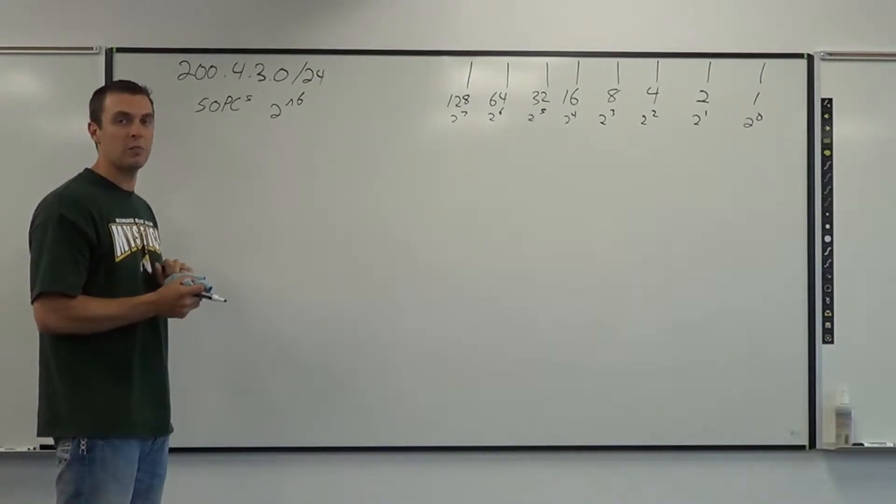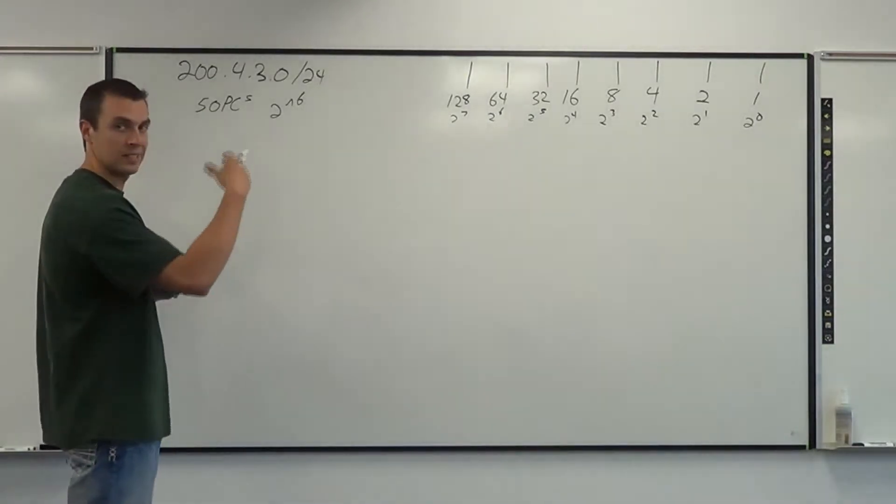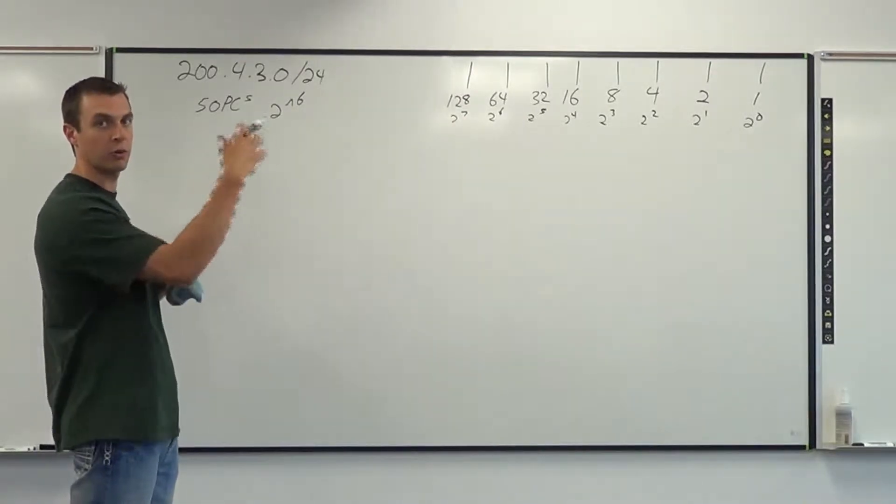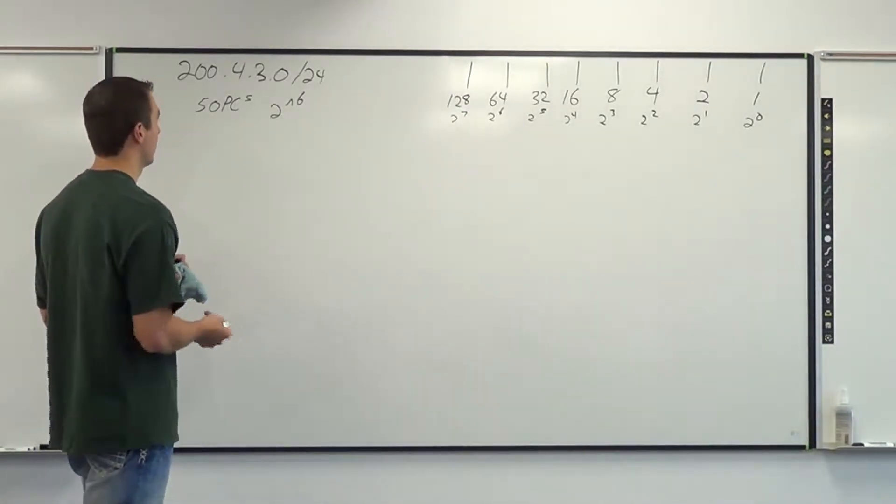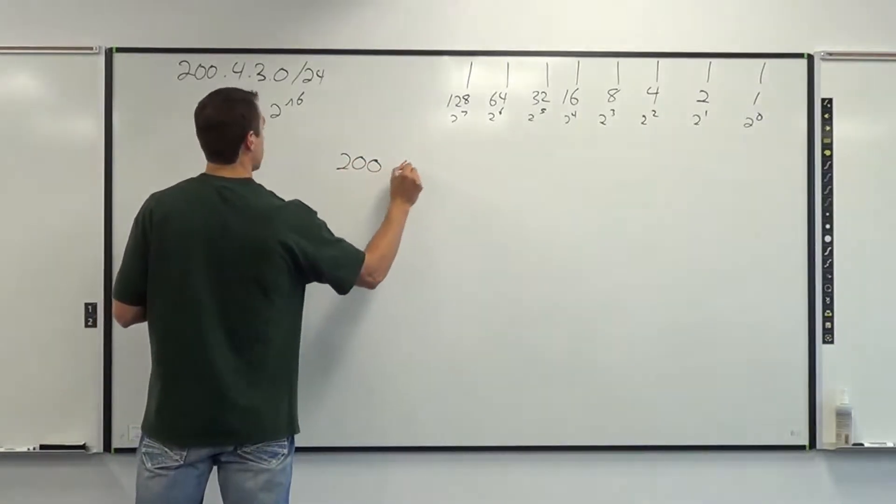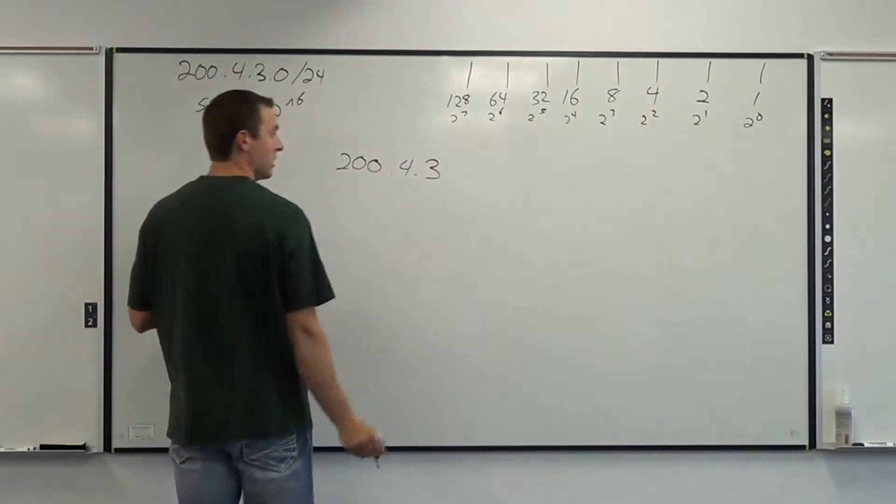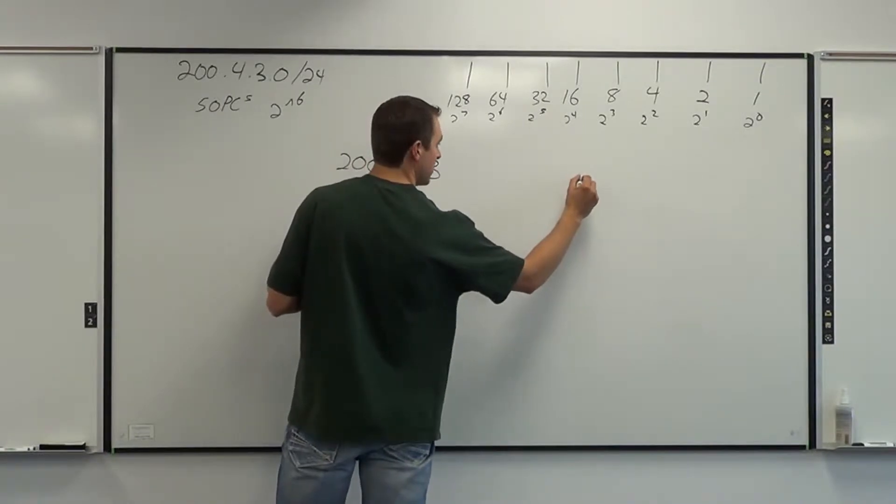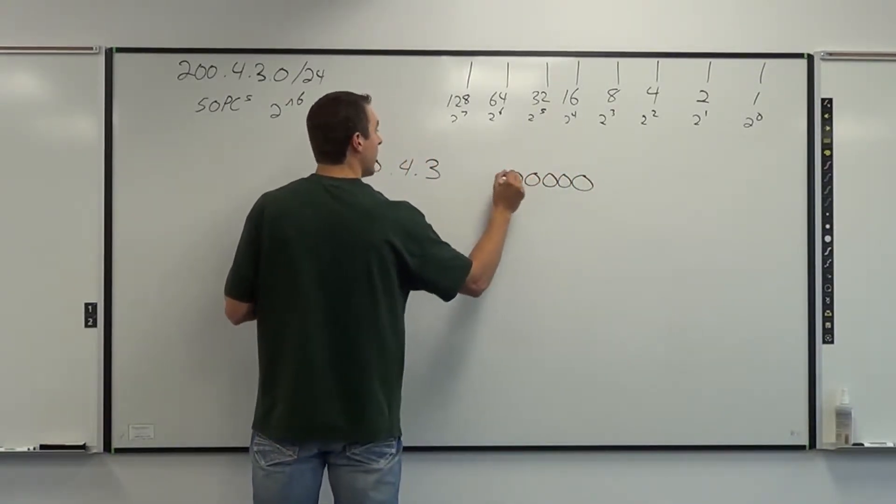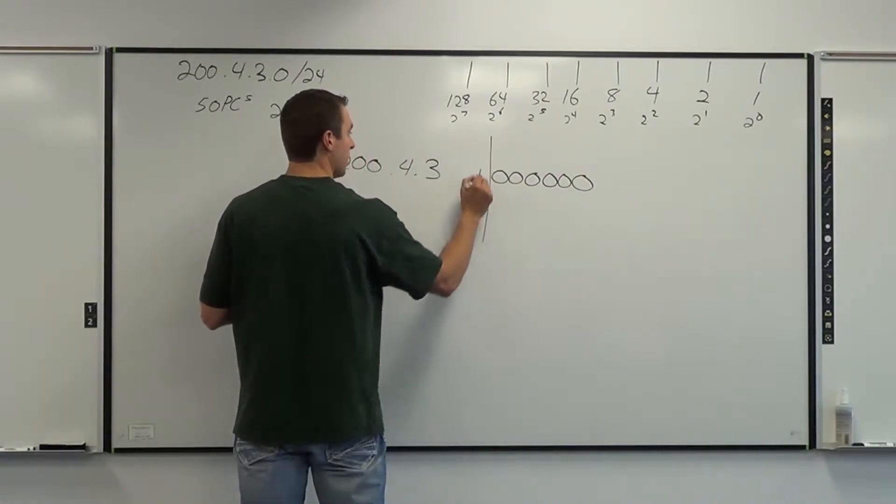So what I do is I draw out my IP address with six zeros right-hand side of the line now. We're working PCs, working right-hand side of the line, we're working with zeros. So I draw out that IP address, 200.4.3, right-hand side of the line with six zeros: 1, 2, 3, 4, 5, 6, 7, 8.